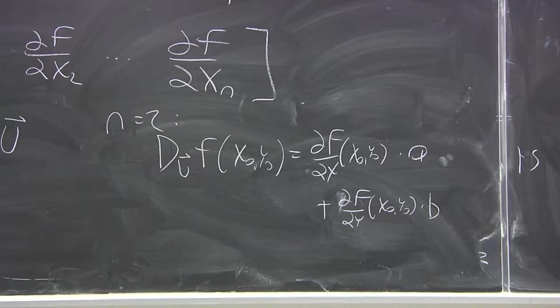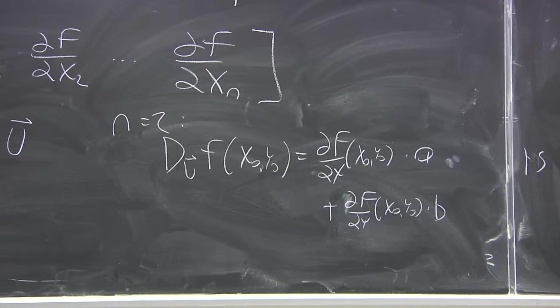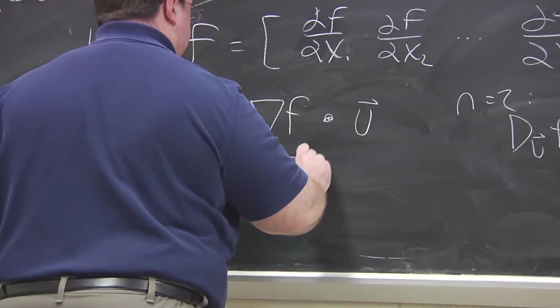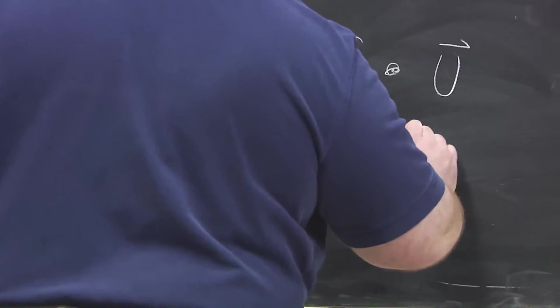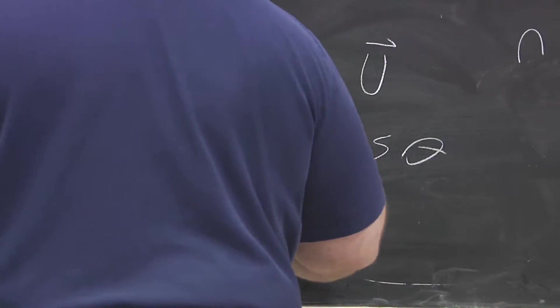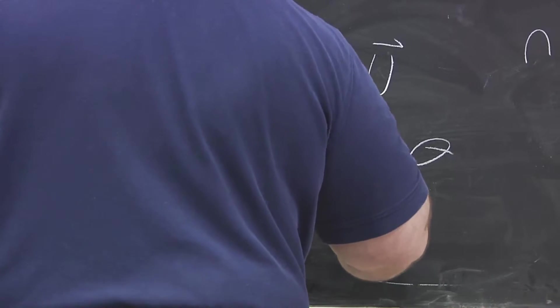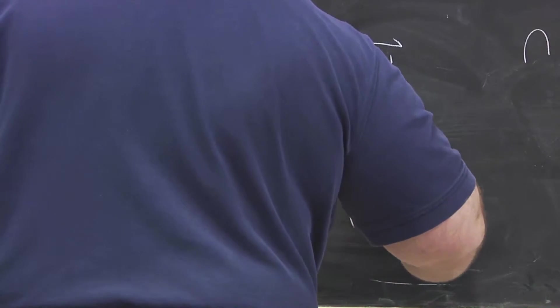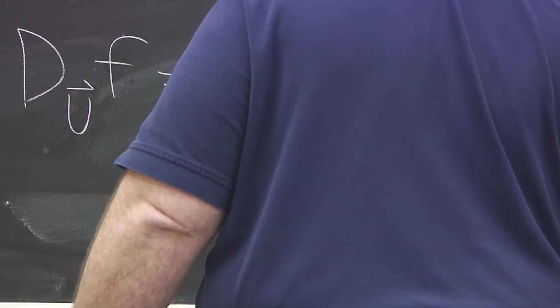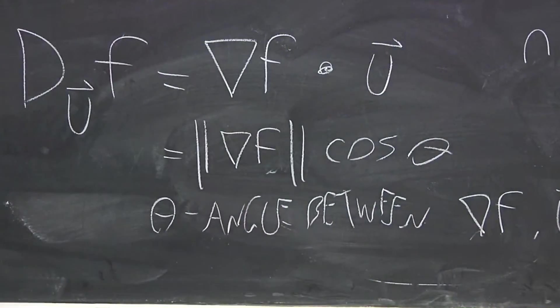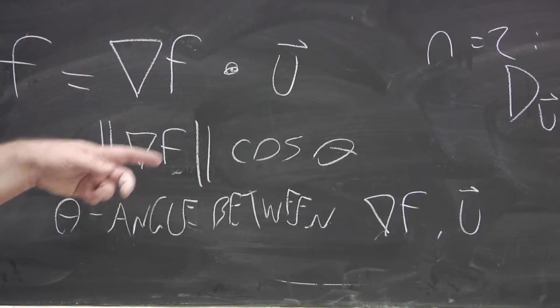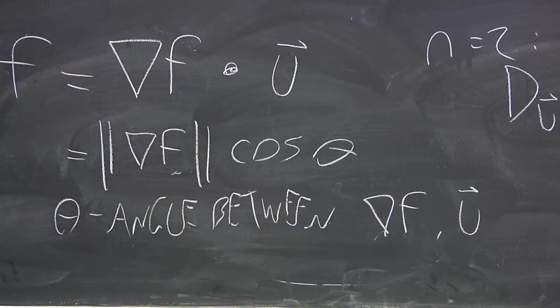So, that's using the mathematical definition of dot product. Using a more physics-type definition of dot product, this would be the magnitude of the gradient times cosine theta, where theta is the angle between the gradient at that point and u. Because normally, it's the magnitude of both vectors and the cosine of the angle, but the magnitude of u is one, because it's a unit vector.